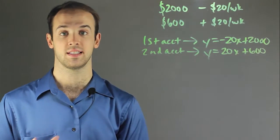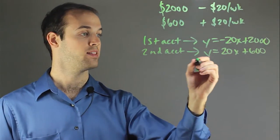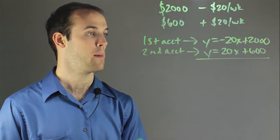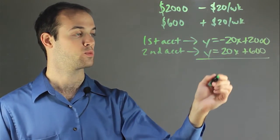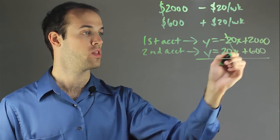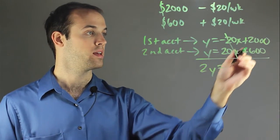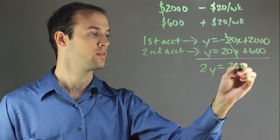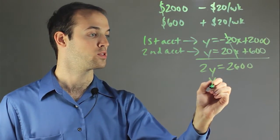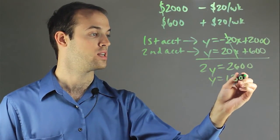So now to use the system I'm going to add these two together to get the x's to drop out because this one is negative 20x and this one is positive 20x. So when I do that these are gone and I got 2y is equal to $2,600. And then I divide both sides by 2 and I get that y equals $1,300.